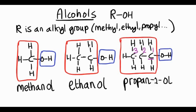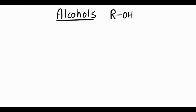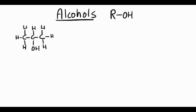The OH can go in different positions on the chain, so let's look at some examples. With a chain of three carbons again, but this time we'll put the OH group on the second carbon. If we number the carbon atoms and the OH group is on that second carbon, it would actually be propan-2-ol.